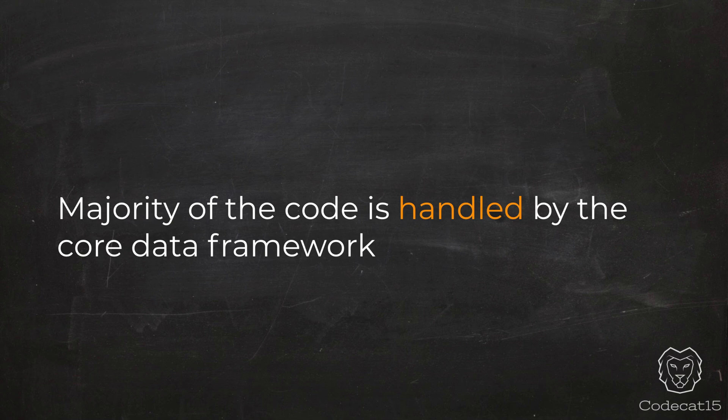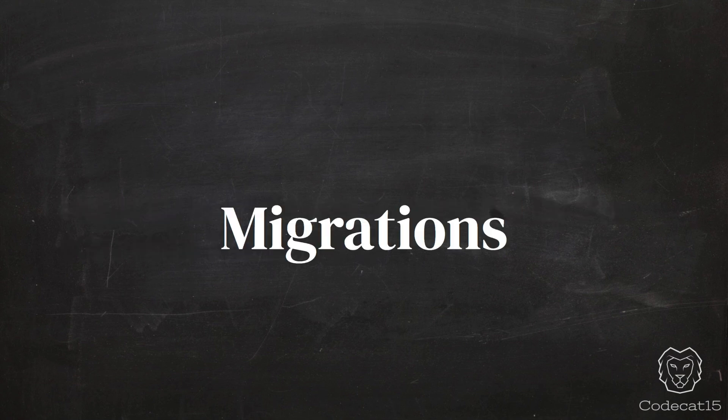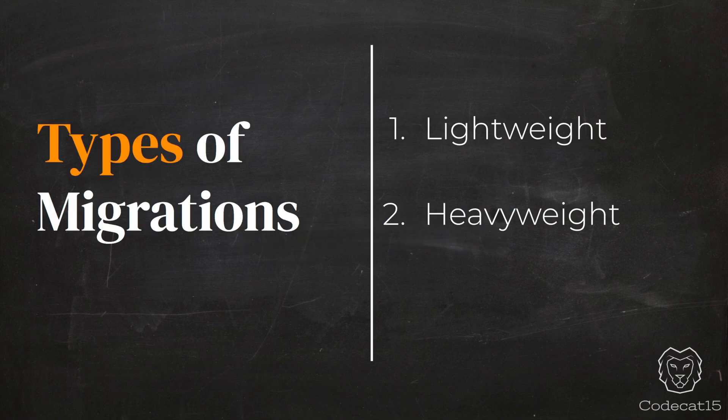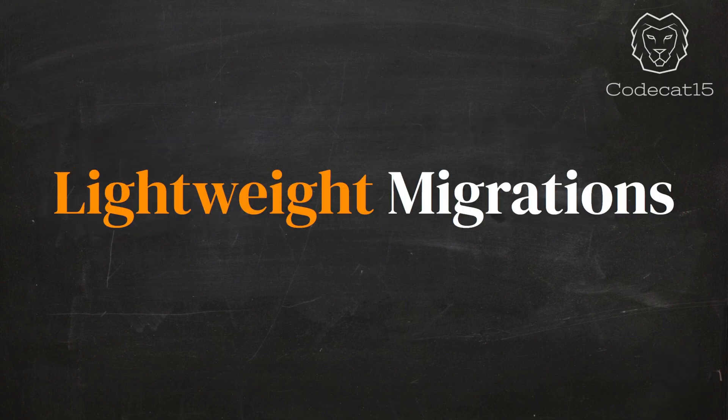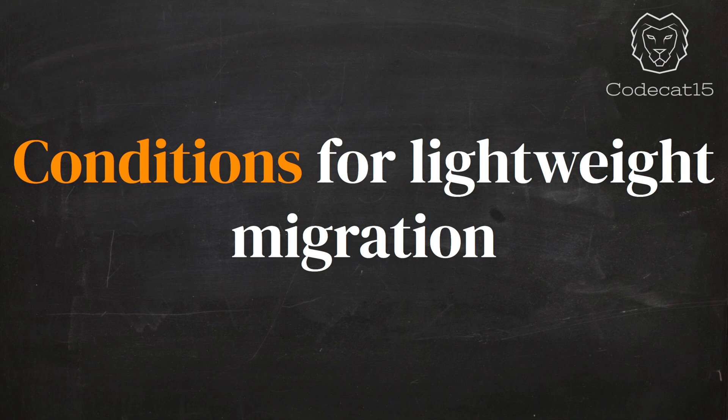But Core Data ke case mein aisa nahi hai. Core Data mein majority of the code is handled by the framework itself to handle any new changes for your new version. Core Data has a feature called migration. Migration ke do types hote hain: one is lightweight migration and the other is heavyweight migration. Majority of the time we'll be using lightweight migration.